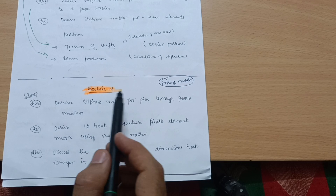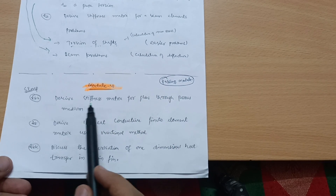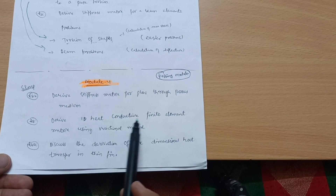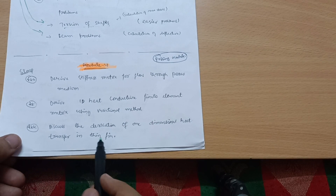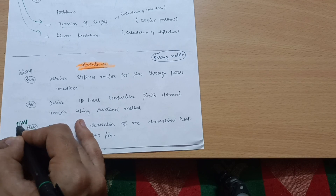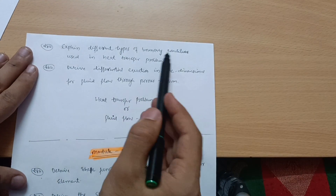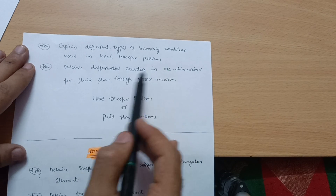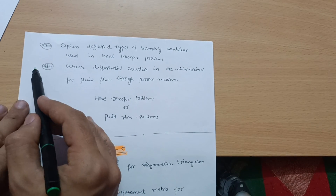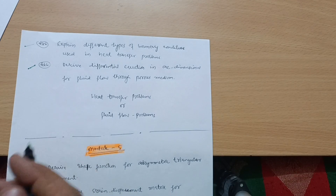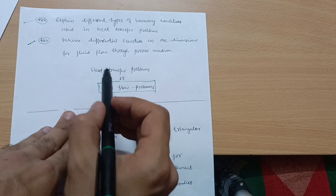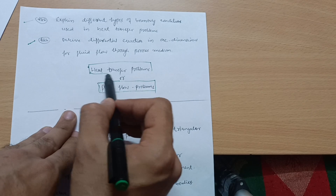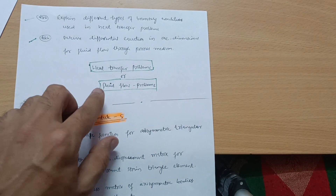Module 4 is a passing module. Derivations to cover include: derive stiffness matrix for flow through porous medium, or derive the heat conductive finite element matrix using variational method. Next: discuss the derivation of one-dimensional heat transfer in thin fin — super important question. Also: explain different types of boundary conditions used in heat transfer problems, and derive the differential equation in 1D for fluid flow through porous medium. Fluid flow problems are simpler compared to heat transfer problems.